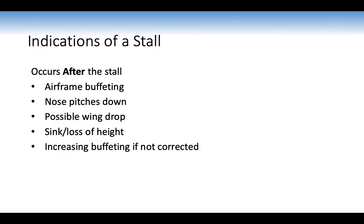Indications of the stall — these occur after the stall: you'll feel the airframe buffeting, as the airflow separates from the wing and strikes the horizontal stabiliser/tailplane. The nose pitches down due to the coupling effect. There could be a possible wing drop if you're not maintaining that reference point using rudder. Loss of height, and increasing buffeting if not corrected.